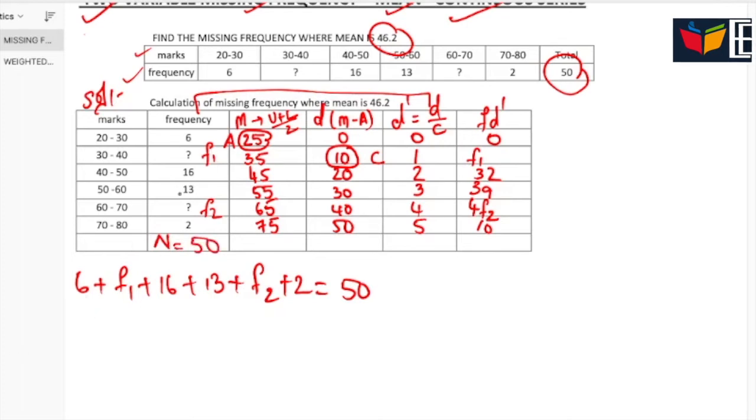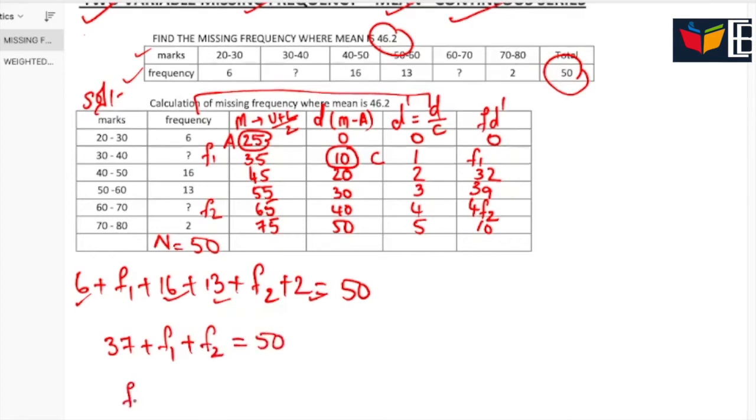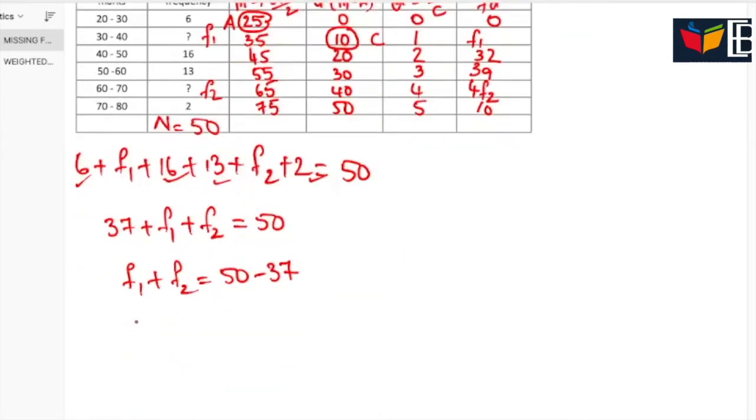The total of frequency is 50, so add all of these: 37 plus F1 plus F2 equal to 50. F1 plus F2 equal to 50 minus 37, so F1 plus F2 equal to 13. This is our equation 1.